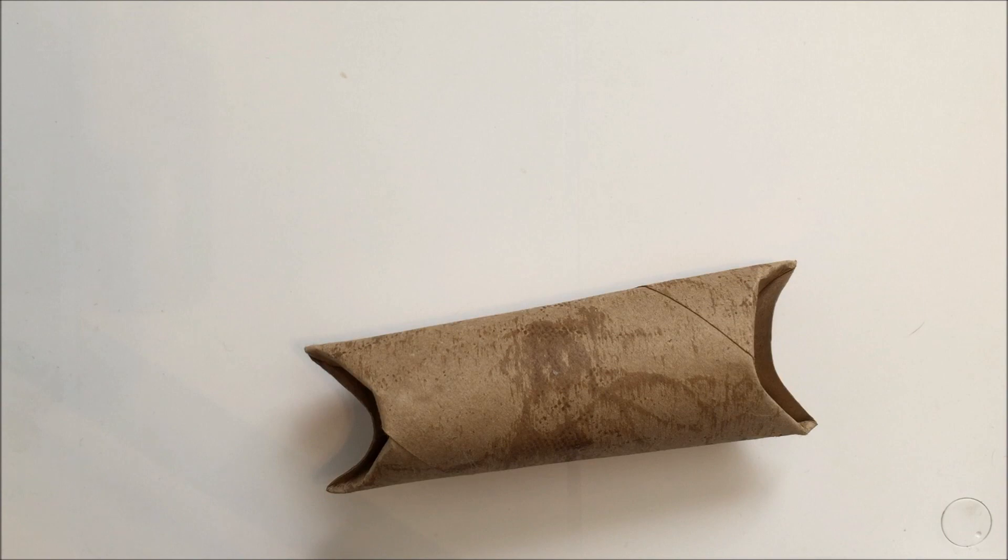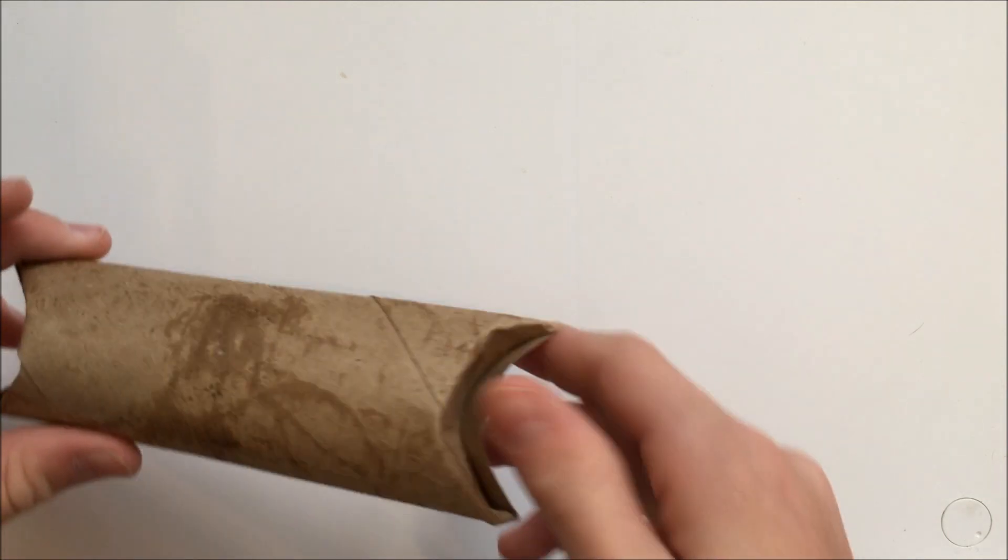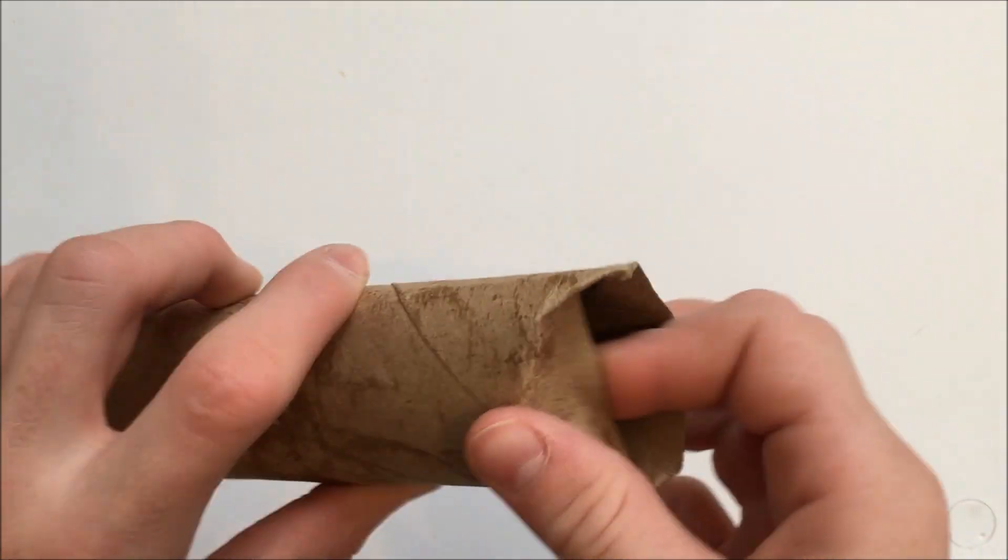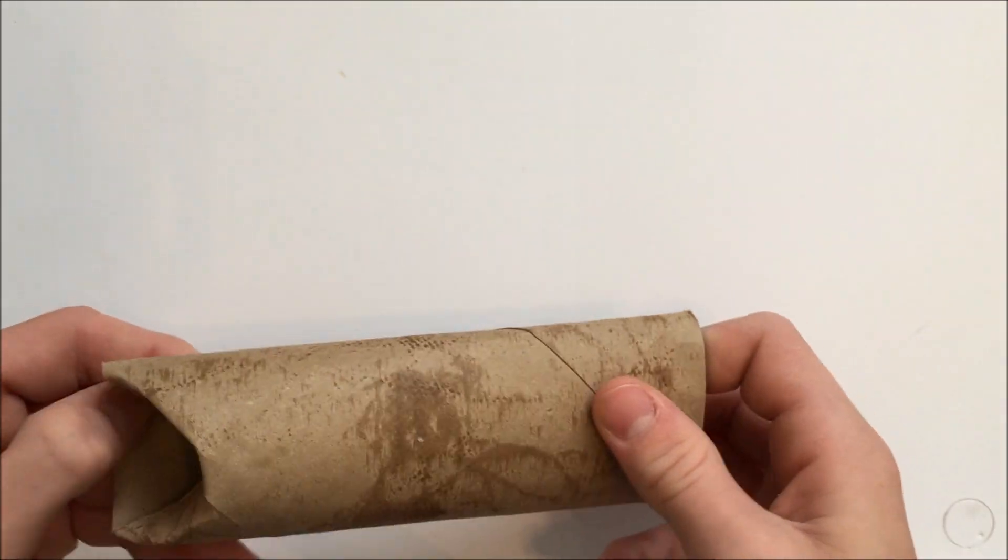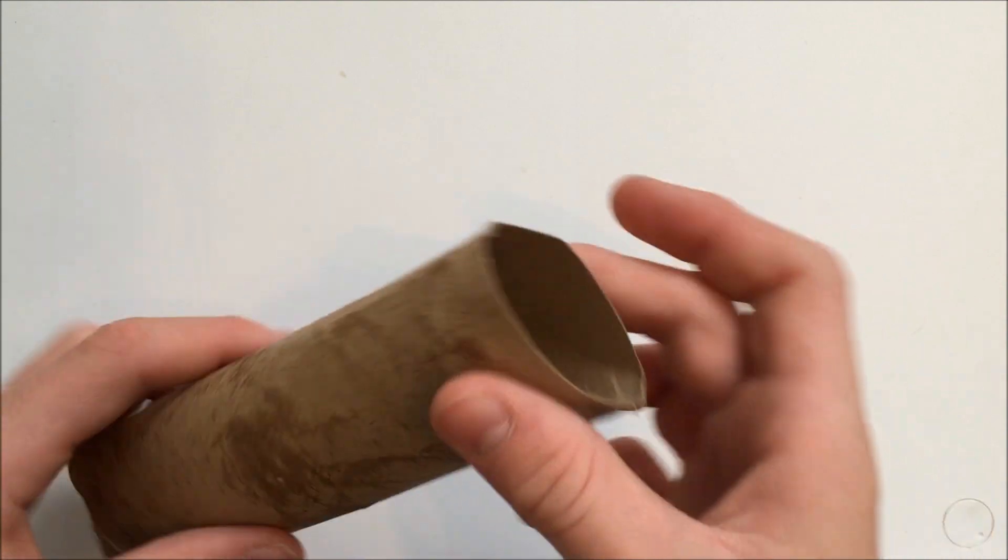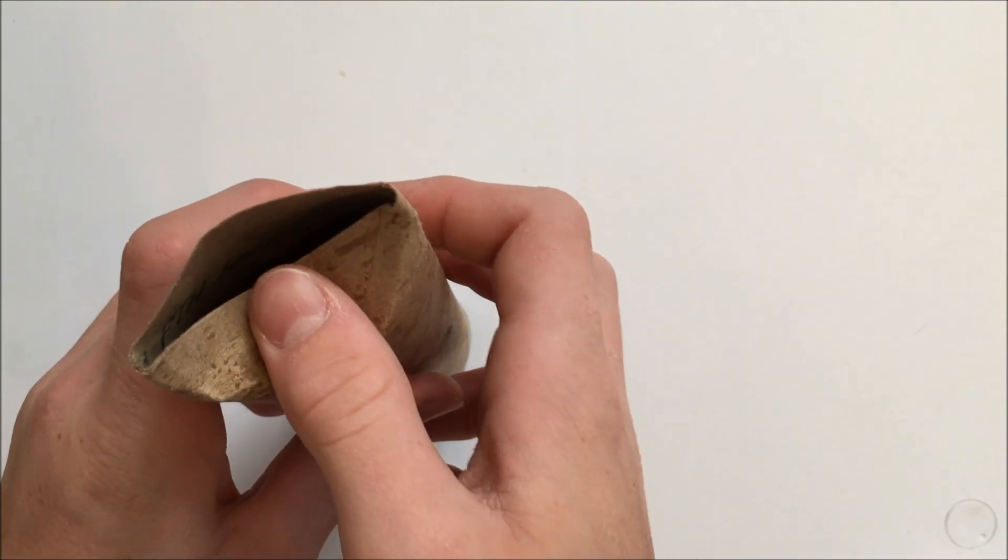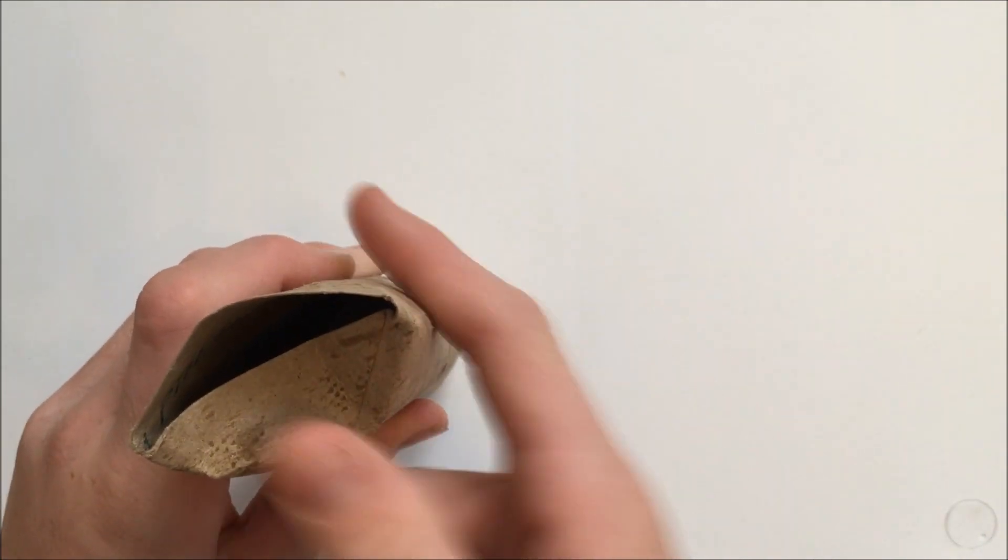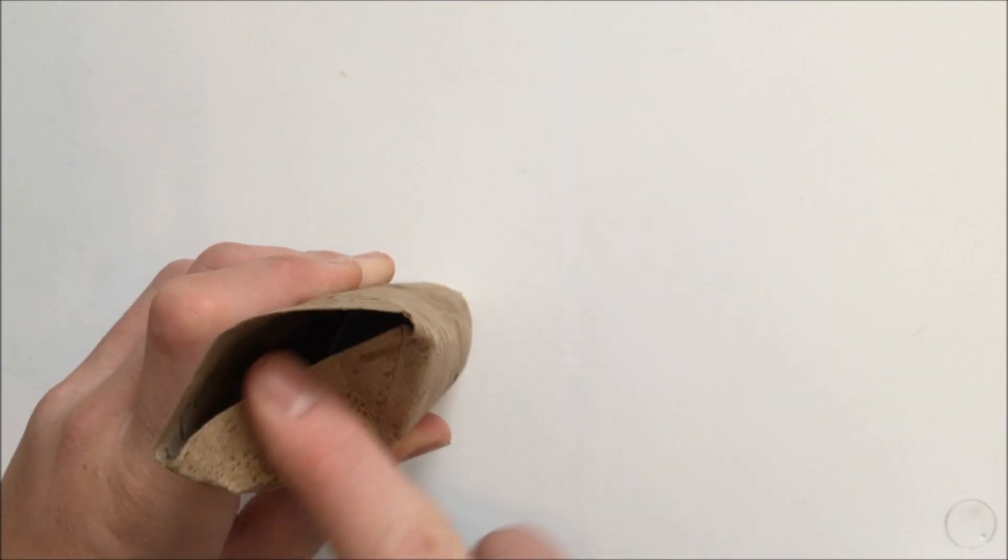So for this first toy it's just a paper towel tube, actually a toilet paper tube but either would work. So start off like this and then you're going to want to take it and push it in with your thumb. So push that in so it makes a little dent right here.